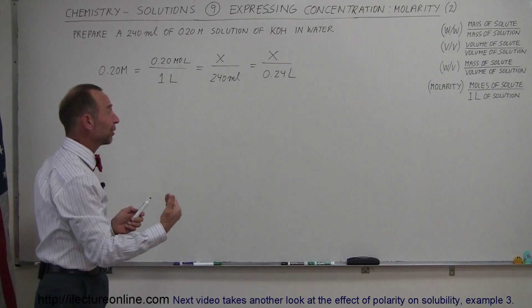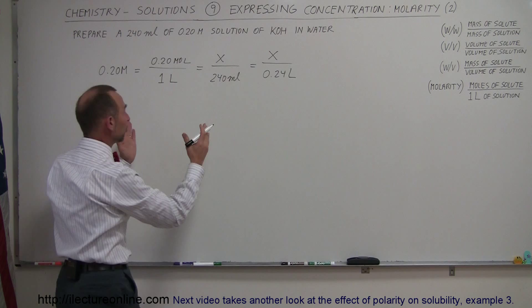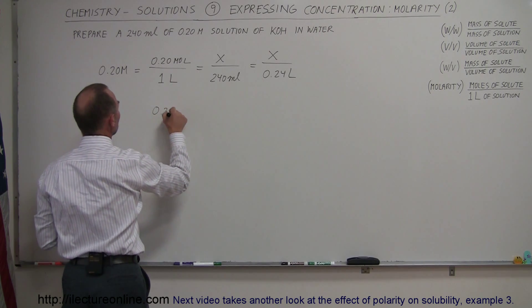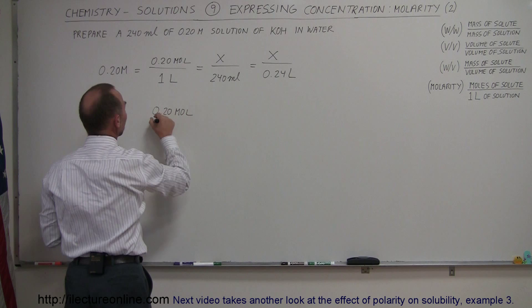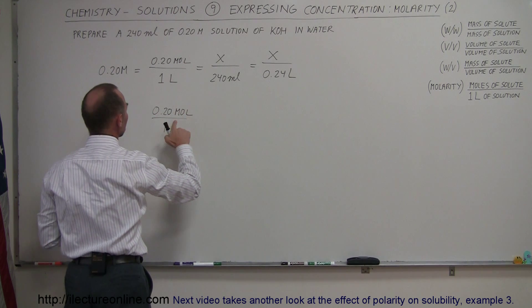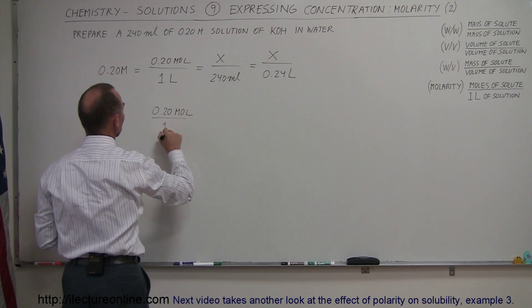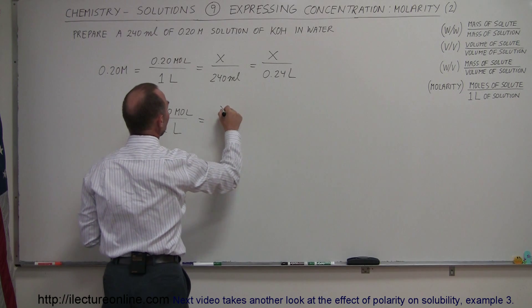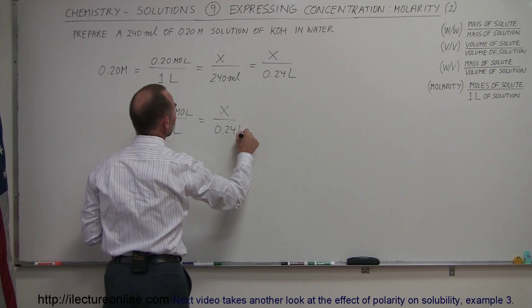So we're going to need less number of moles because we're going to have less solution. How much less? Well, there's a ratio there, so we can write that 0.20 moles divided by 1 liter is equal to X divided by 0.24 liter.